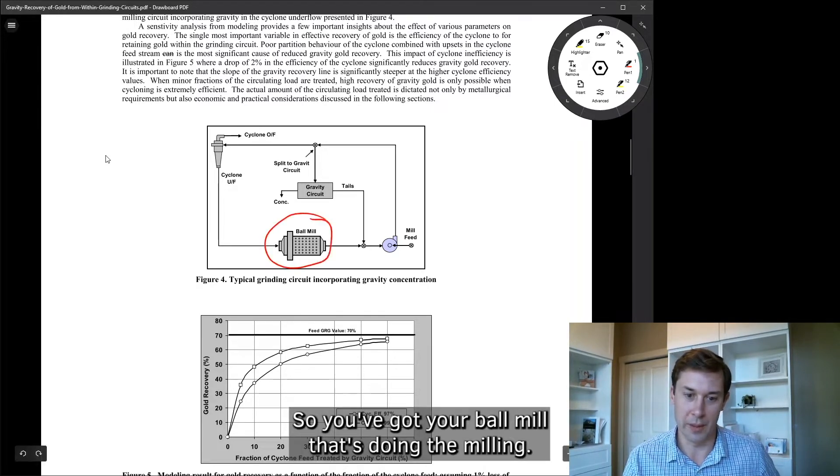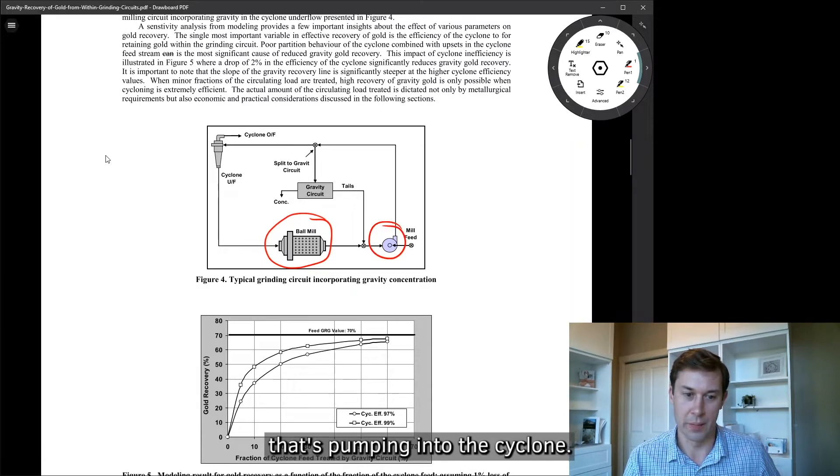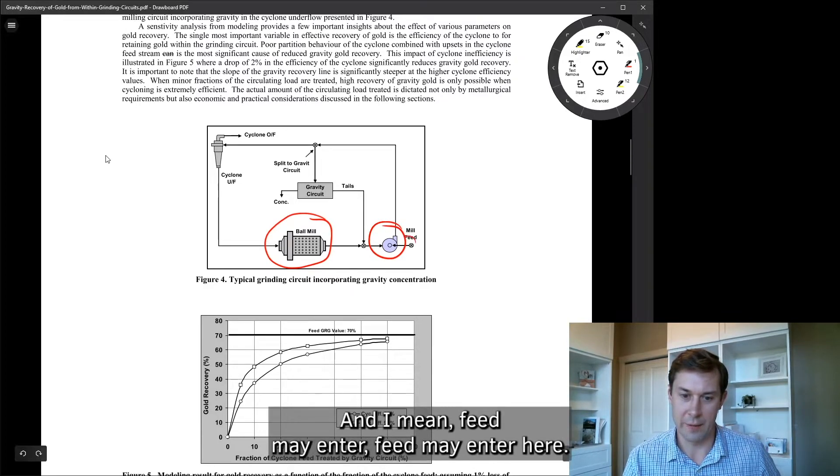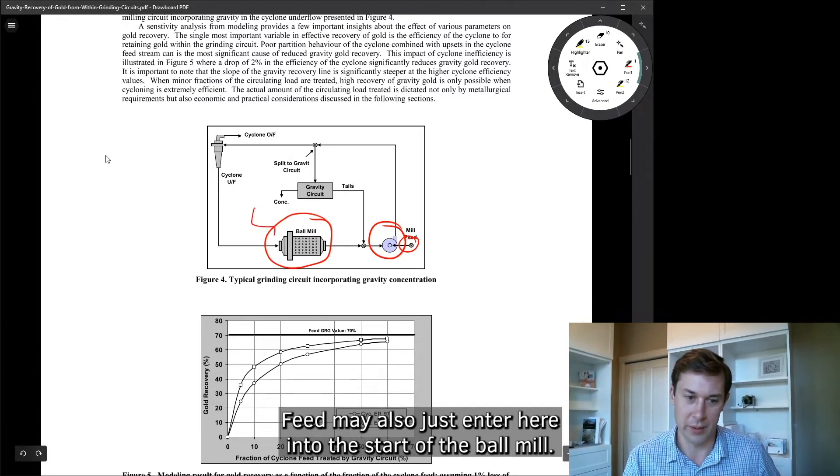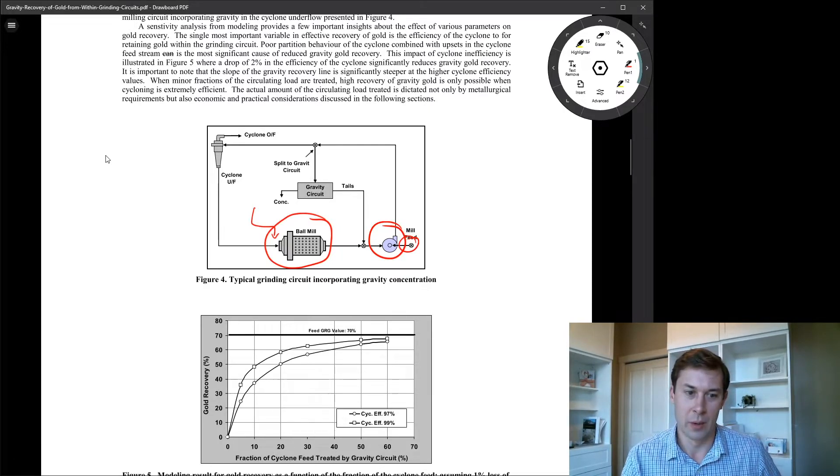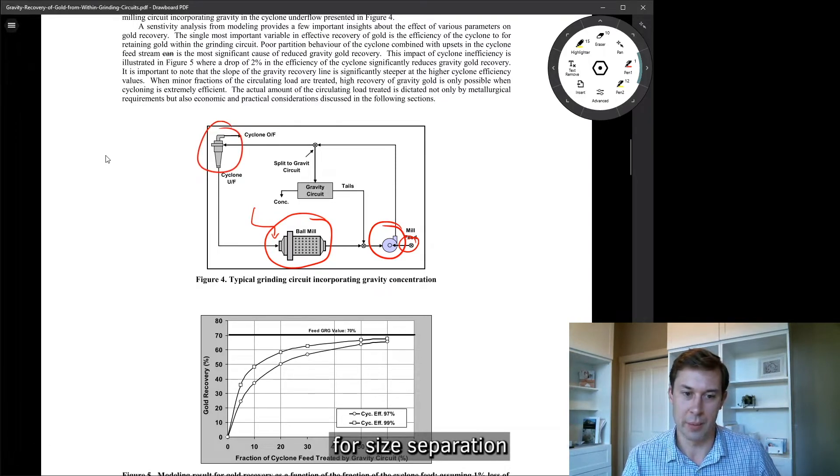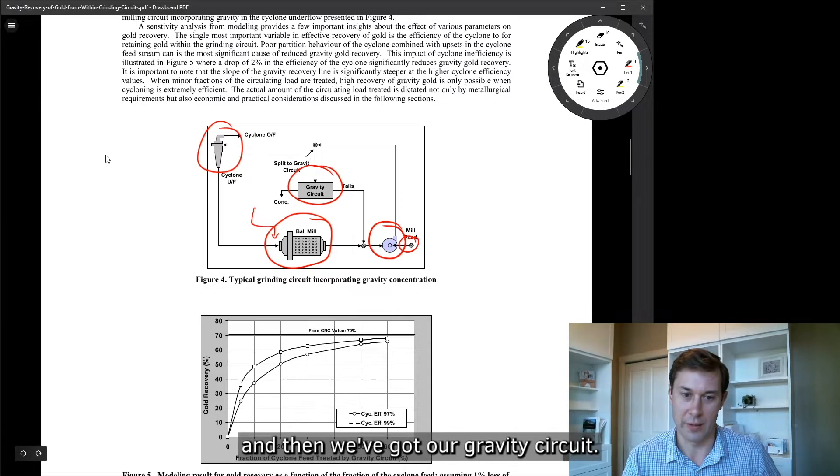So you've got your ball mill that's doing the milling. You've got a pump that's pumping to the cyclone. And I mean, feed may enter, feed may enter here. Often it does. Feed may also just enter here into the start of the ball mill, but that's not really important to the model here.